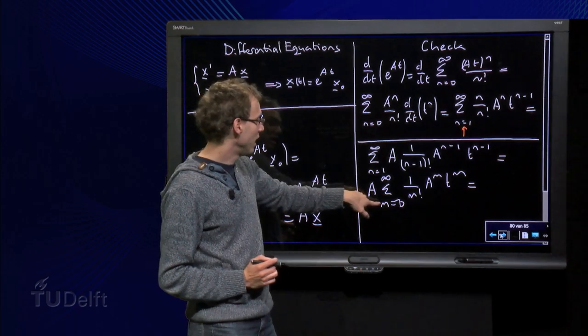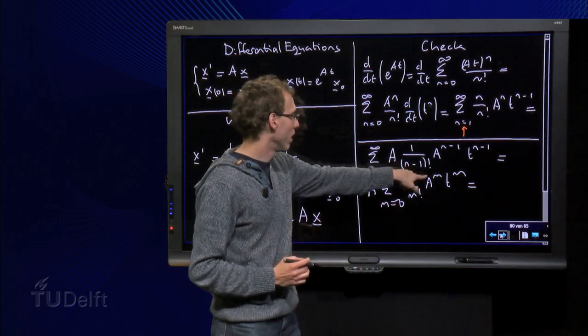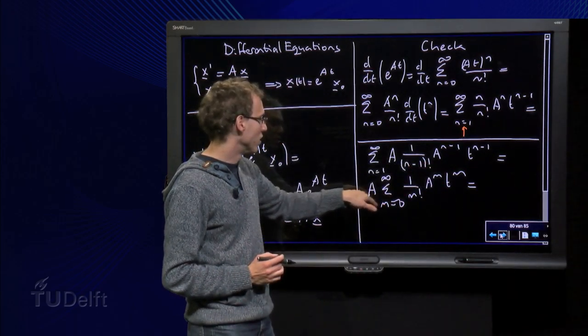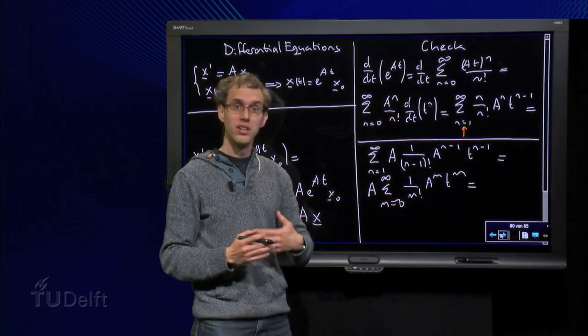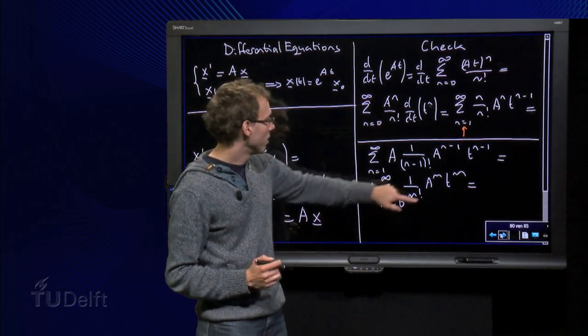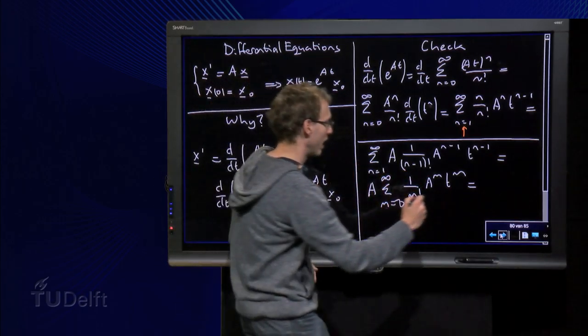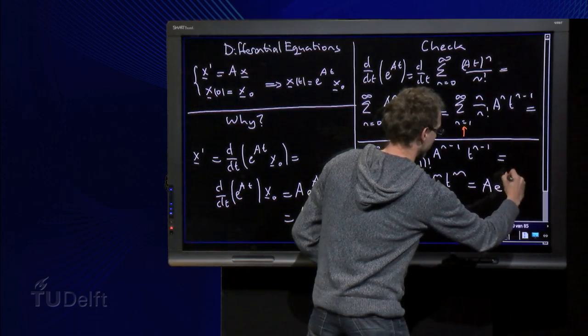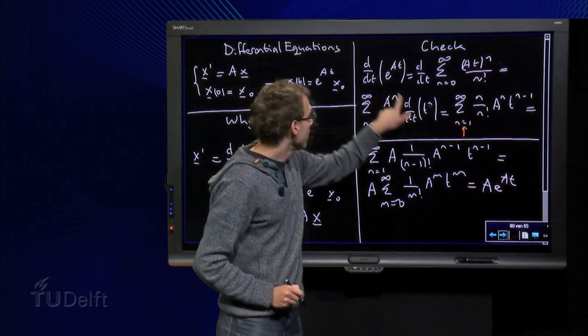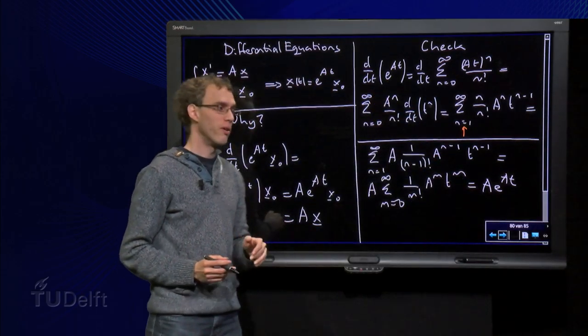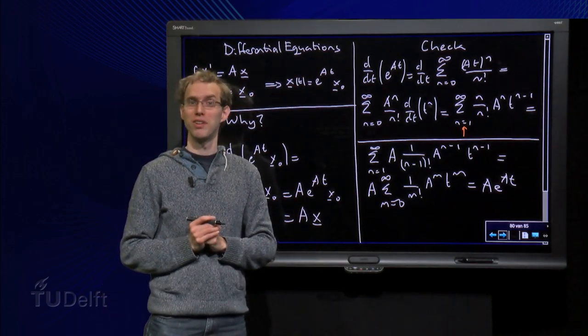Then change the summation index for m, m equals n minus 1, so we get the m factorial, m and m over there. And m starts at zero, just the a can be taken out of the sum, because it does not depend on the summation index. And then we are done, because lo and behold, over here we got back our e to the power a t, with an additional matrix A in front. So indeed the d dt of e to the power a t equals a times e to the power a t, so all steps are fine, which means that over here we have our solution of our system of linear differential equations.